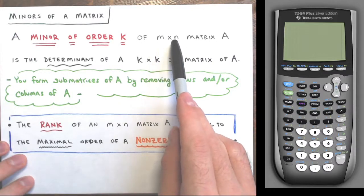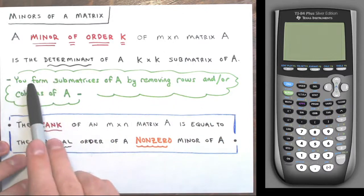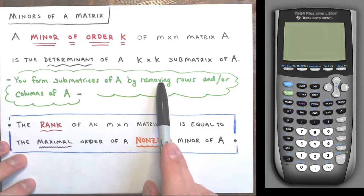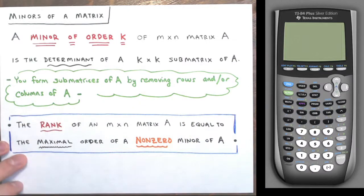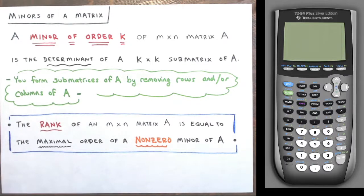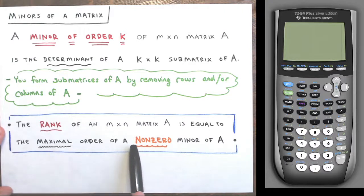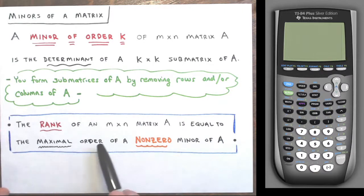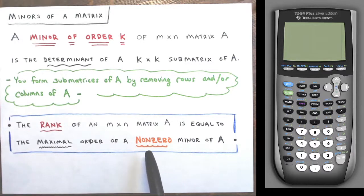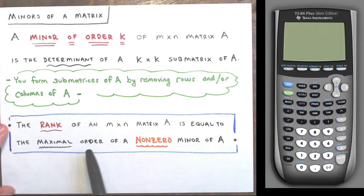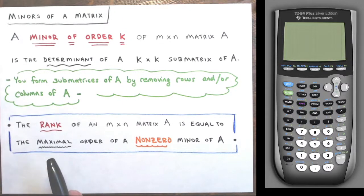You form submatrices of a matrix by simply removing entire rows and/or entire columns of the matrix until you get down to a square matrix. The rank of an m by n matrix A is equal to the maximal order of a non-zero minor of A. So we're looking for these determinants of square submatrices — the largest one we come across that's not zero, that order will be the rank of the matrix.